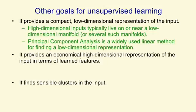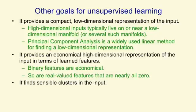Another goal for unsupervised learning is to provide an economical representation for the input in terms of learned features. For example, we can represent the input in terms of binary features — that's typically economical because it only takes one bit to say the state of a binary feature. Alternatively, we could use a large number of real-valued features but insist that for each input almost all of those features are exactly zero, so for each input we only need to represent a few real numbers.